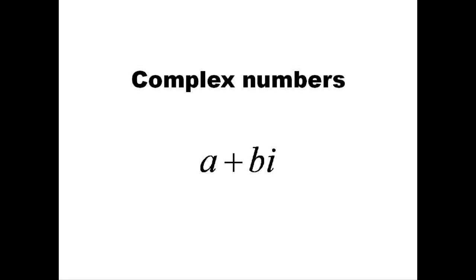Complex numbers have a real and imaginary part. Their general format is a plus bi, where a is the real part and b is the imaginary part.